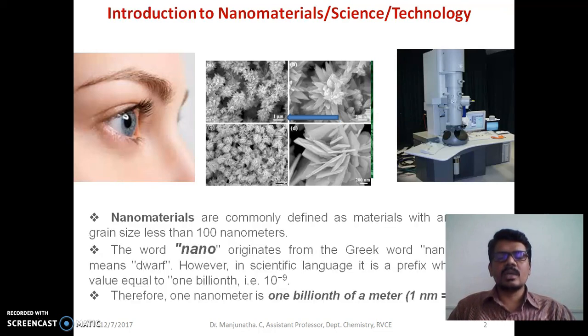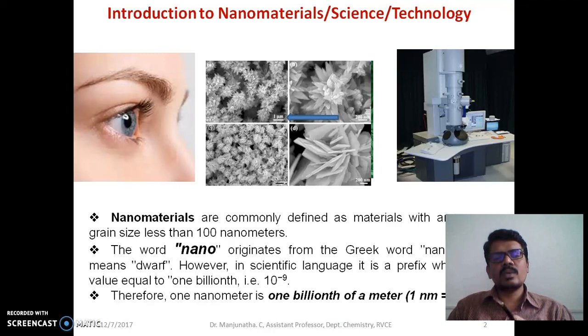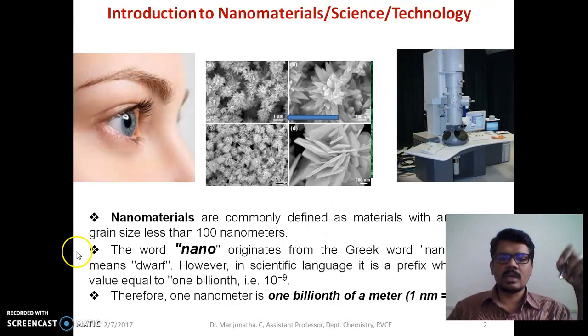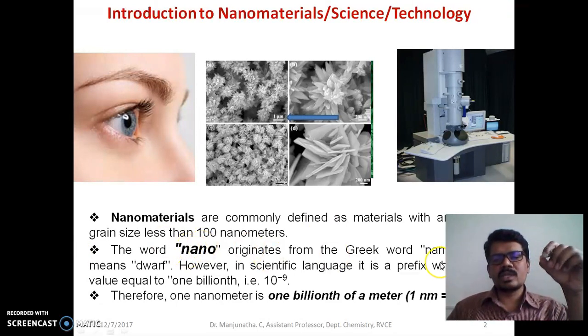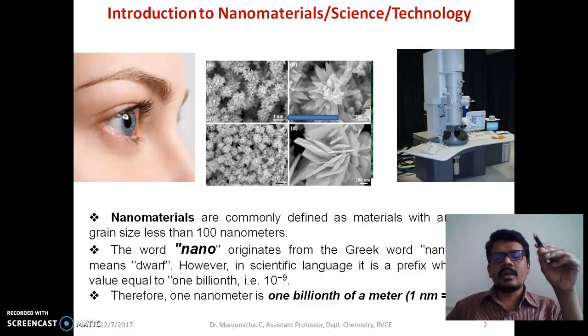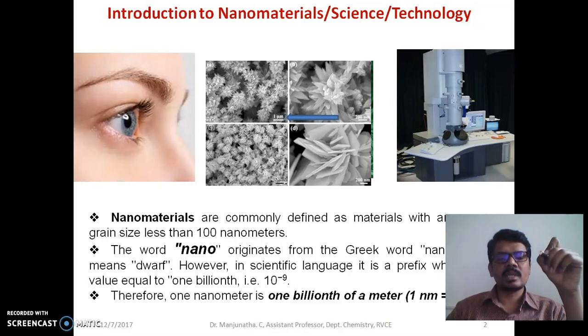Nanomaterials are the aggregates of particles, materials with an average grain size less than 100 nanometers. This nano word originates from the Greek language - it means dwarf, small. In scientific language, it is a prefix which has the value equal to one billion, that means 10 power minus 9.